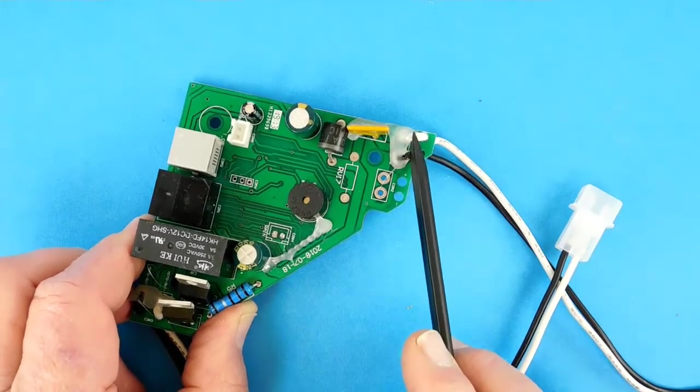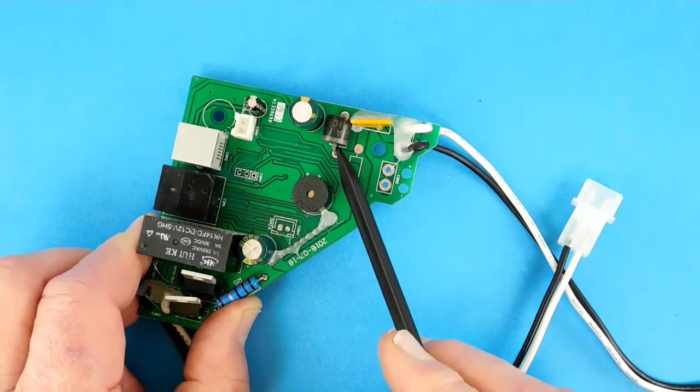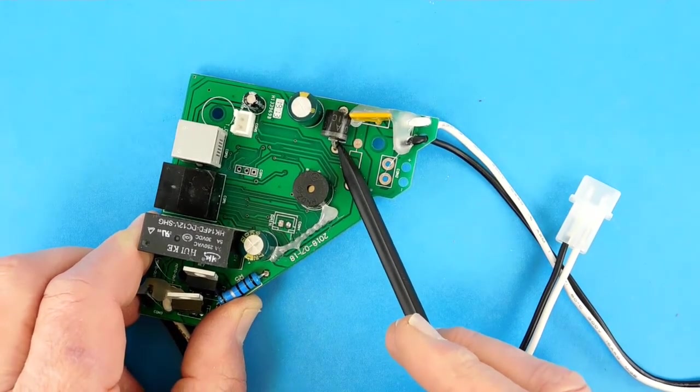You can see these are the two wires which bring the power in, and there's the same diode that protects against reverse polarity connections.